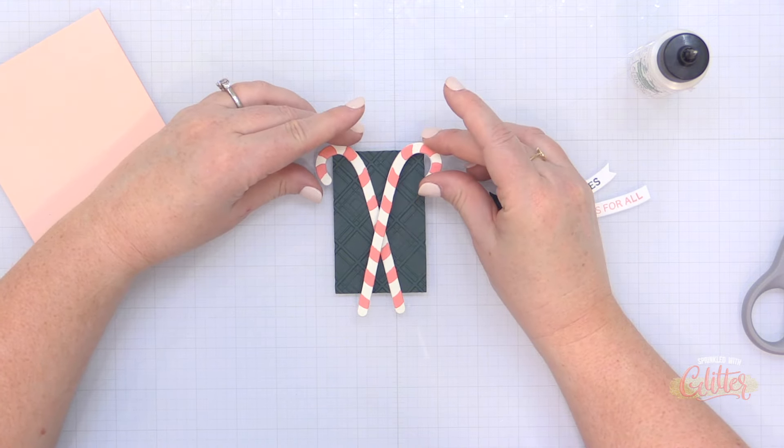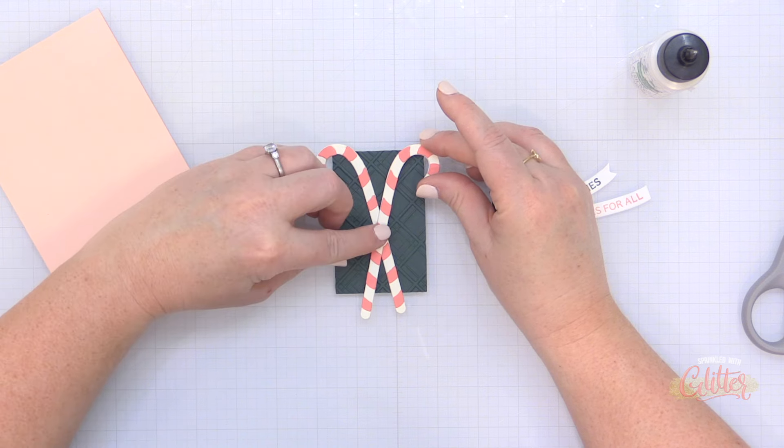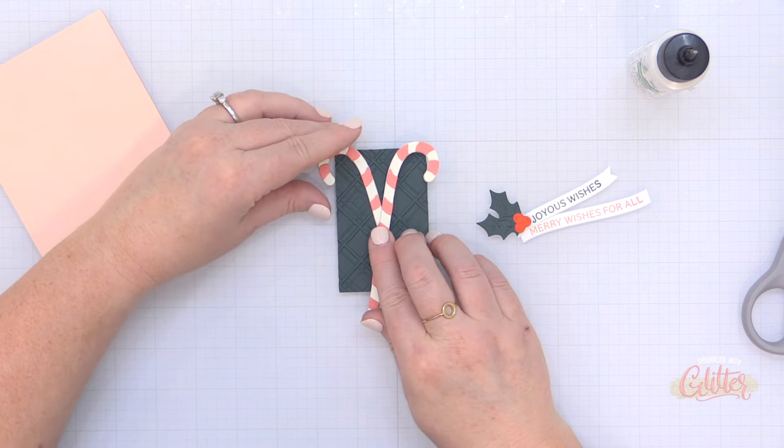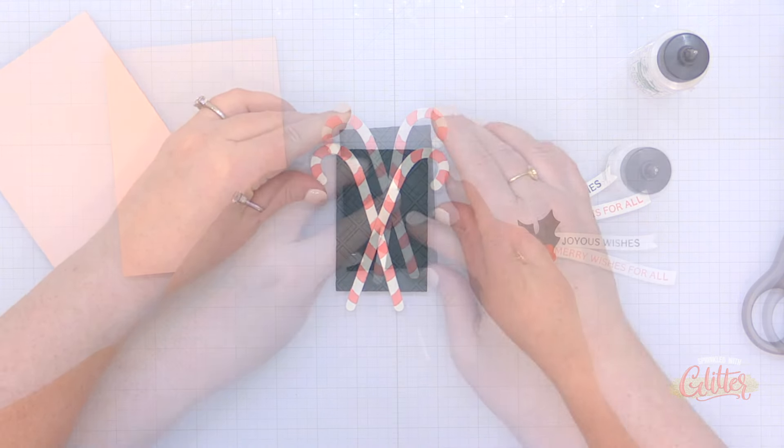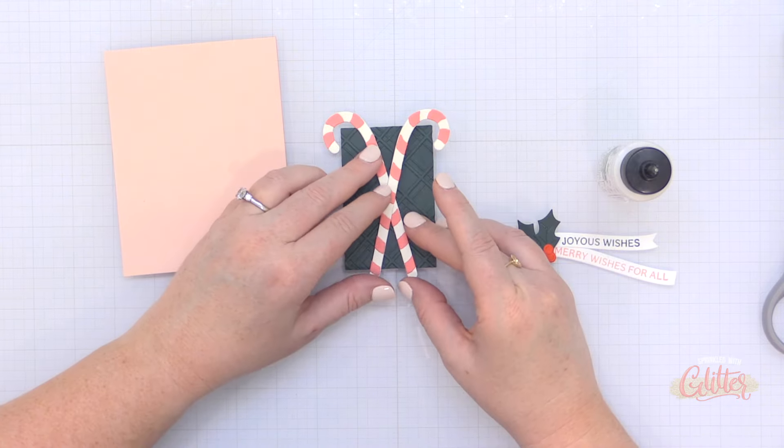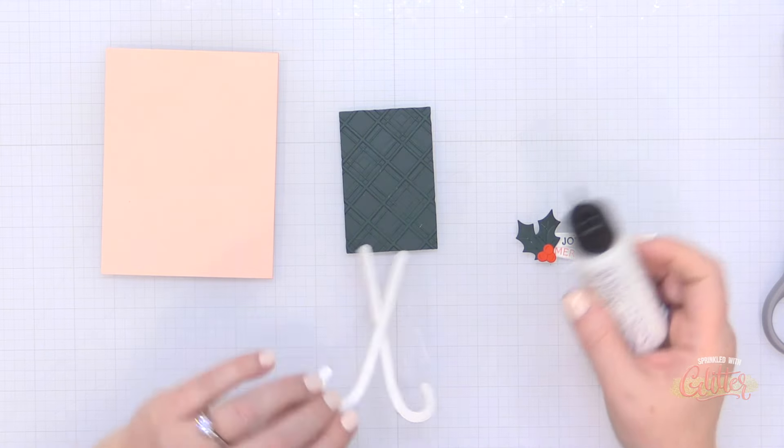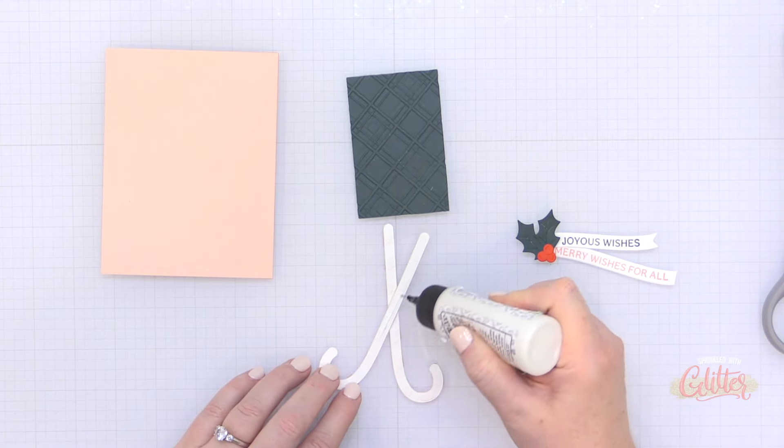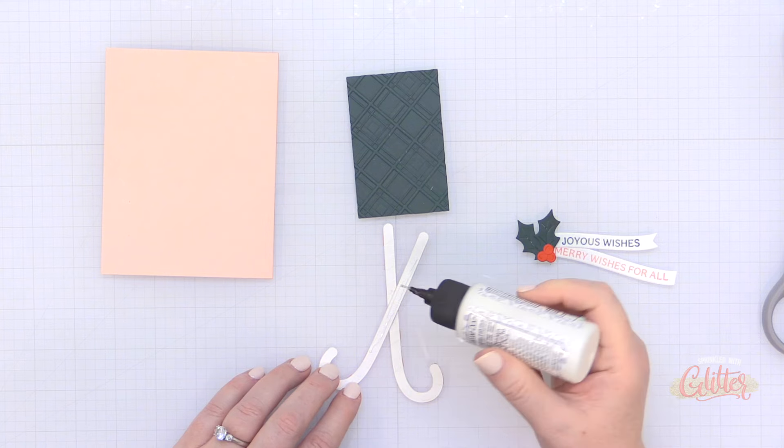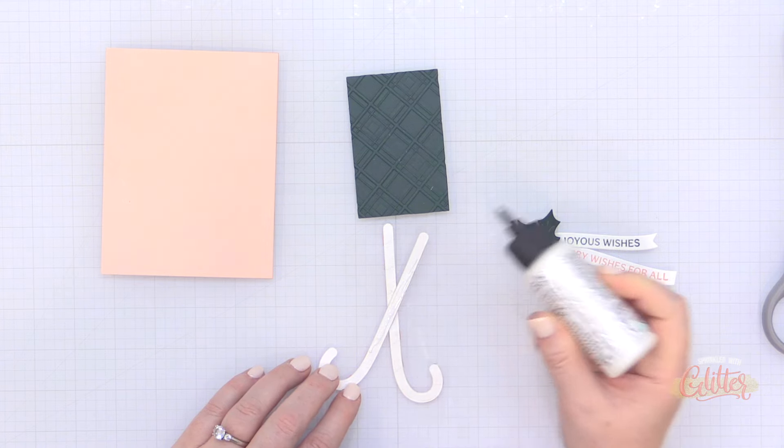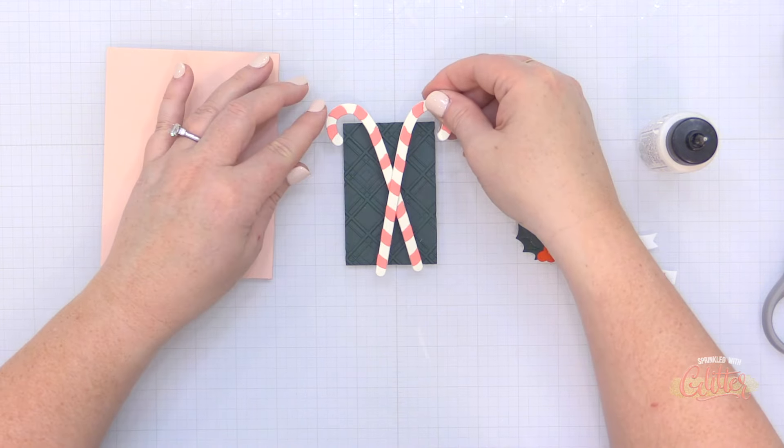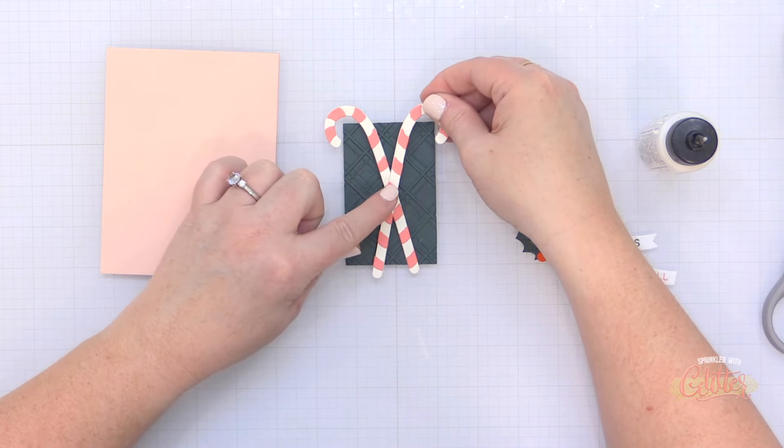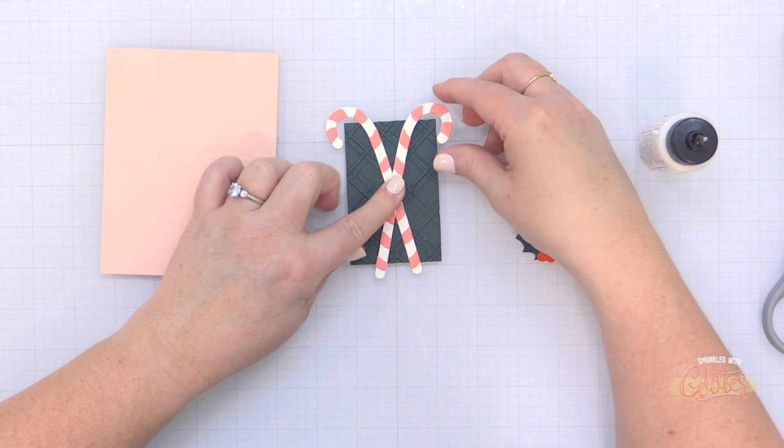So you can see here I am working on my candy canes, I'm adhering them together using a little bit of liquid glue. And once I get them positioned where I want them, kind of crisscrossing each other, I'm going to flip them over and add some more liquid glue on the back and adhere these to that argyle plaid piece that I created. And then I am going to take my sentiment strips and lay these over the top.